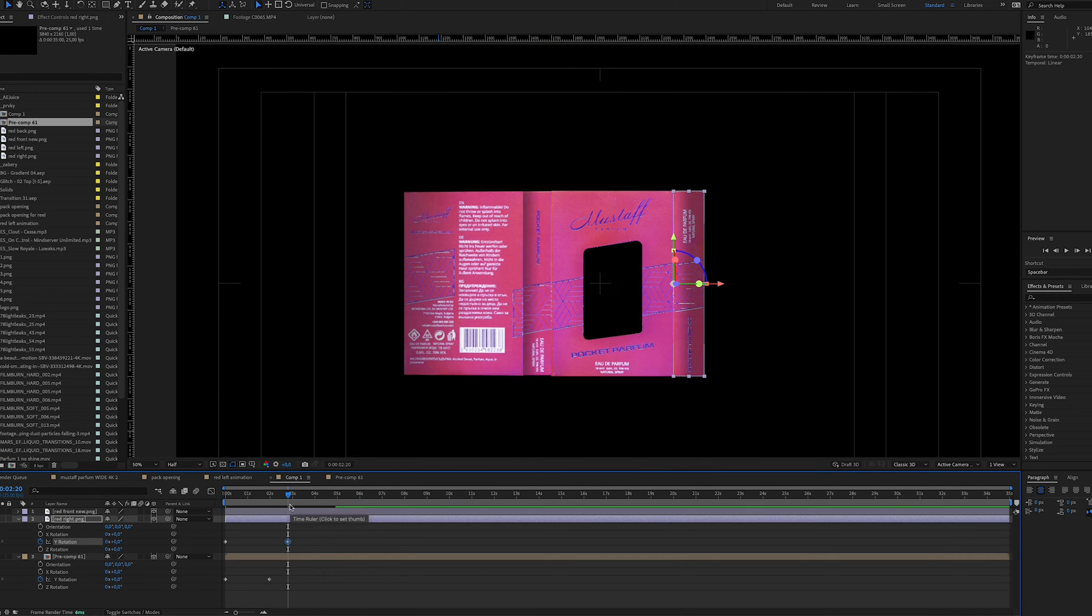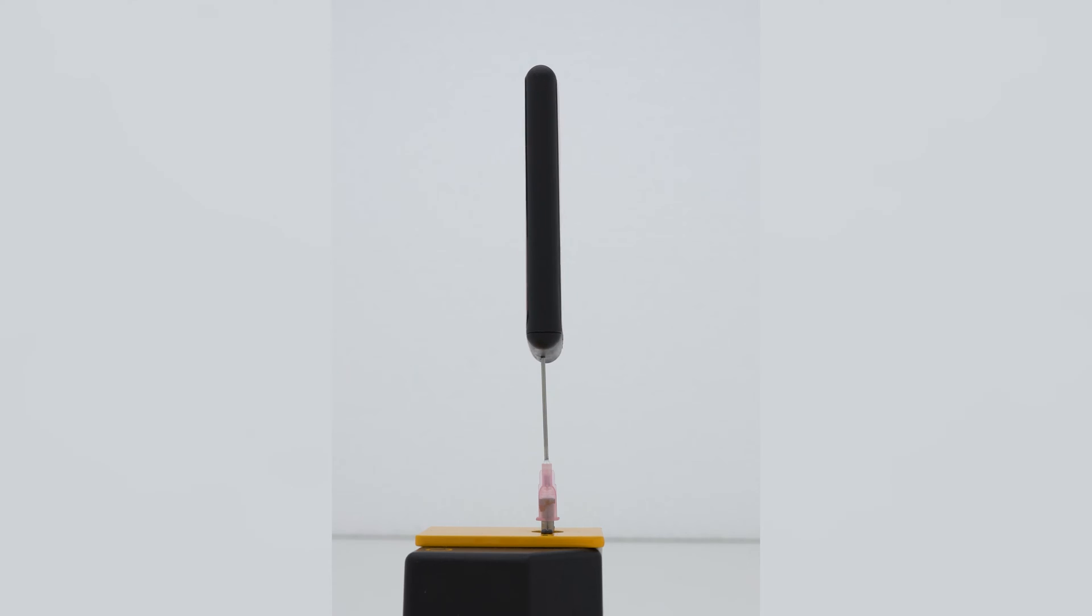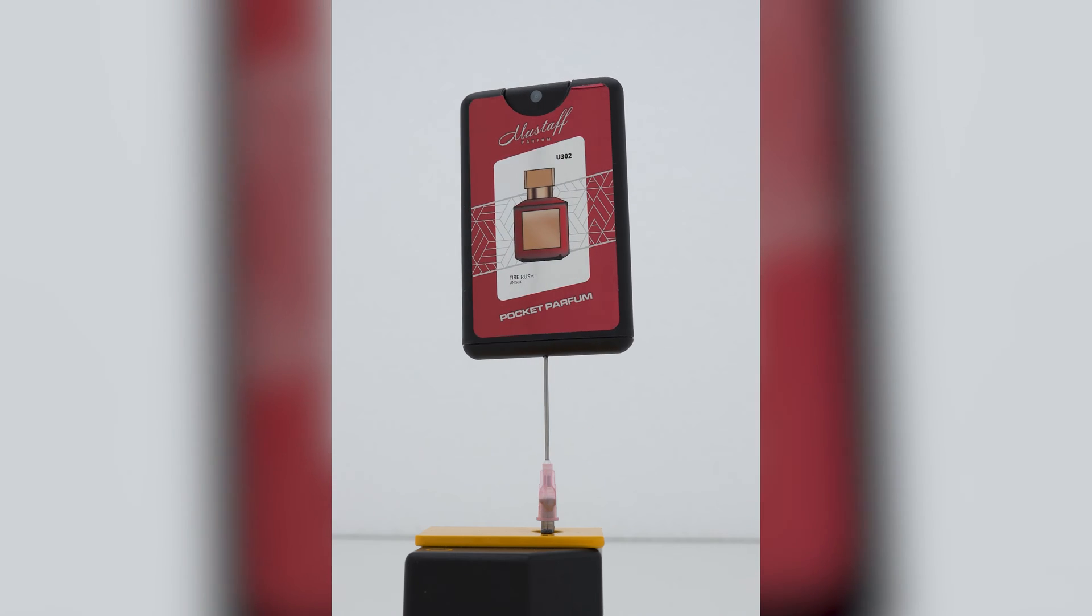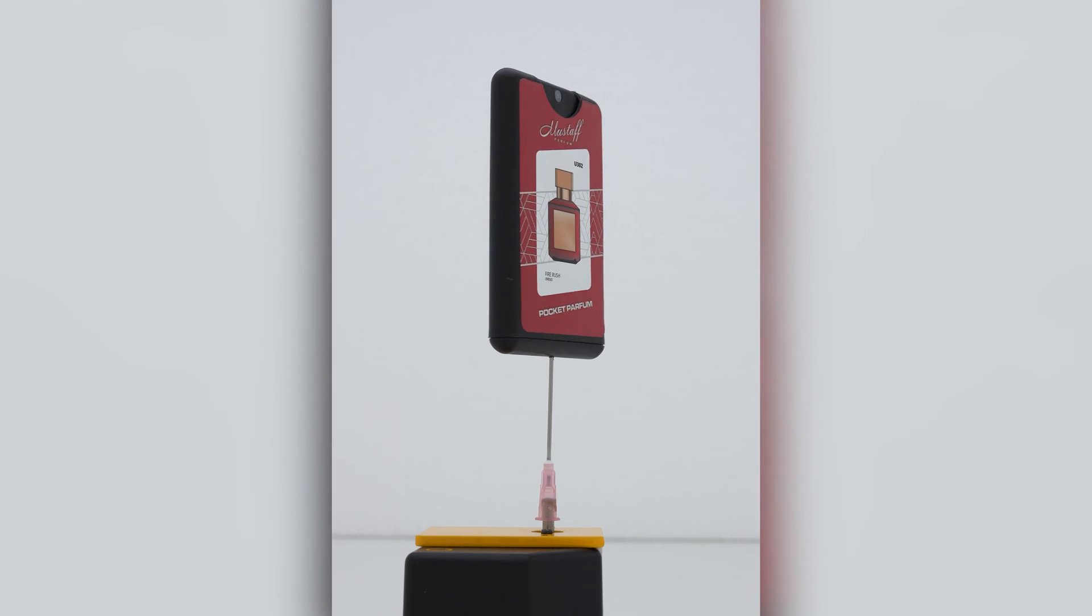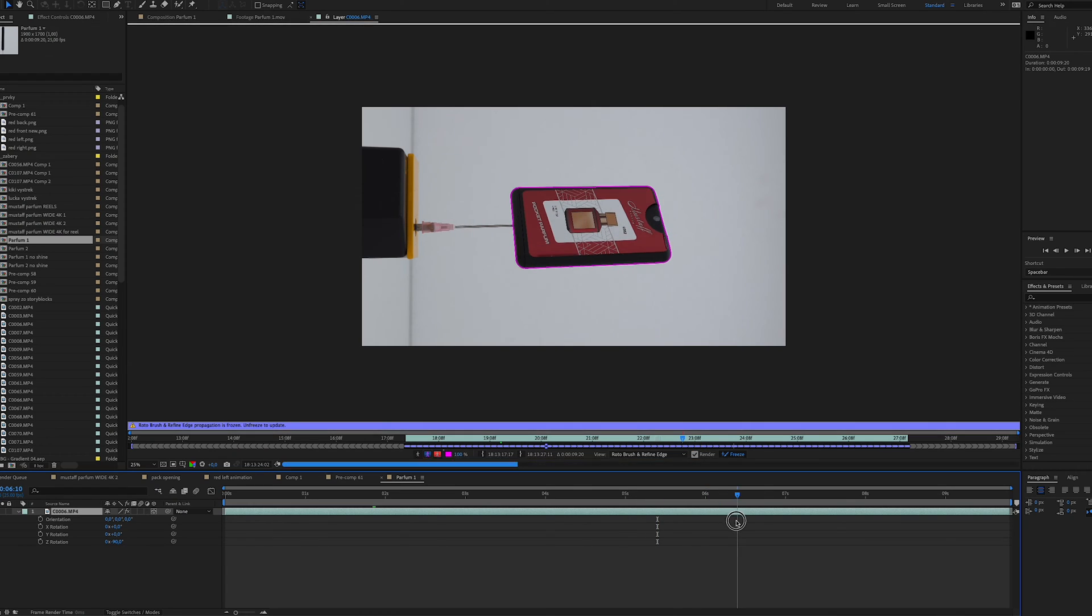When I'm happy with the illusion of the package opening I can remove the background on the clip where the perfume is rotating on a Y axis. To remove the background from the shot I use the Rotobrush tool. Then I pre-render it.